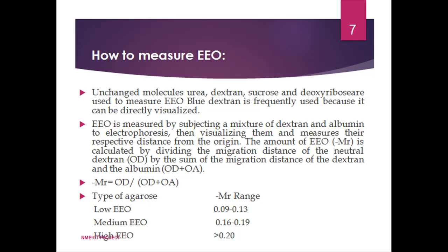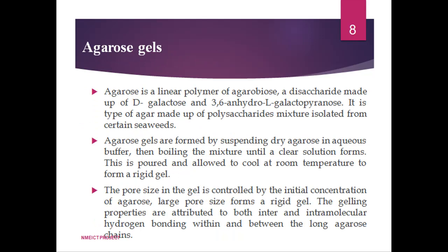Agarose gels. Agarose is another support medium widely used during the electrophoresis process. Agarose is a linear polymer of agarobiose disaccharide made up of D-galactose and 3,6-anhydro-L-galactopyranose, as shown in the figure. It is a type of agar made up of a polysaccharide mixture isolated from certain seaweeds. Agarose gels are formed by suspending dry agarose in aqueous buffer, boiling until a clear solution forms, then pouring and allowing it to cool at room temperature to form a rigid gel. The gelling properties are attributed to both inter- and intramolecular hydrogen bonding between the long agarose chains, giving the gel good anti-convection properties.